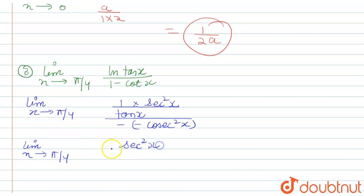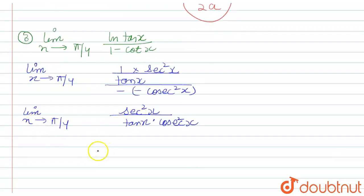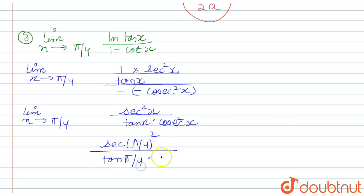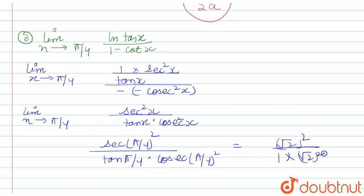So it becomes limit x tends to pi by 4 of sec squared x upon tan x times negative 4, which simplifies to sec squared x upon tan x into cos (times negative 4). Putting x equals pi by 4: sec(pi/4) squared is (root 2)² equals 2, tan(pi/4) is 1, and cosec(pi/4) squared is (root 2)² equals 2. So it equals 2 upon 1 times 2, which equals 1. The answer is 1. Thank you.